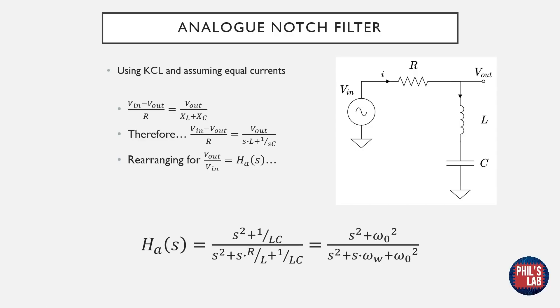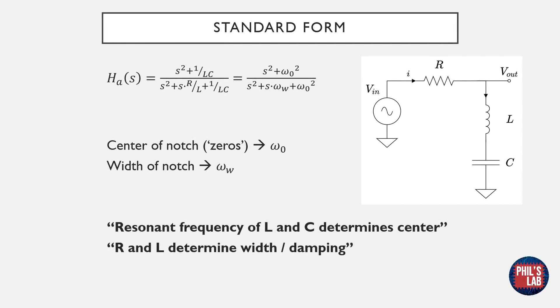The transfer function is of second order, and can be written in somewhat of a standard form over here. The centre of the notch is denoted by ω₀, and the width of the notch is denoted by ωw. We can see that the centre of the notch is actually due to a pair of zeros, and due to the resonance of the inductor and capacitor given by √(1/LC).